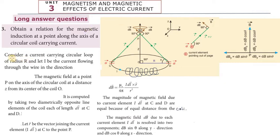Question: Consider the current carrying circular loop of radius R. So this is the radius R, and let I be the current flowing through the wire in this direction. The magnetic field at a point P on the axis of the circular coil at a distance Z from the center of the coil — this is the center of the coil, the center point O, and the distance from O to point P. At point P, the magnetic field can be calculated.